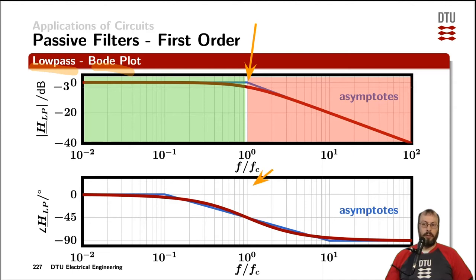Furthermore, the phase is turning down by minus 45 degrees, which comes from the single pole located at fc.